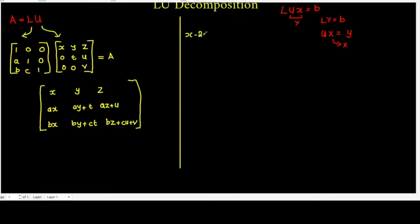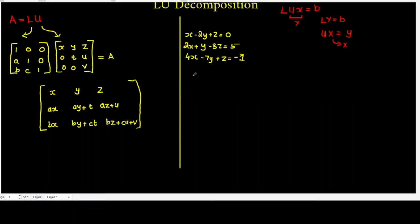The example system is: X minus 2Y plus Z equal to 0, 2X plus Y minus 3Z equal to 5, and 4X minus 7Y plus Z equal to minus 1. We need to write this in the form Ax equal to B. So we write A as the coefficient matrix: 1, minus 2, 1; 2, 1, minus 3; 4, minus 7, 1. This is our matrix A.